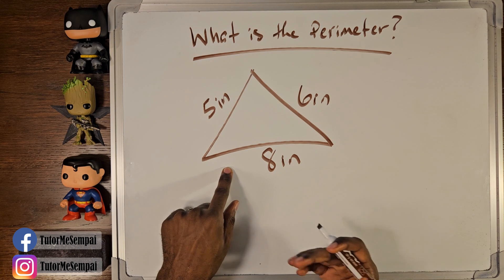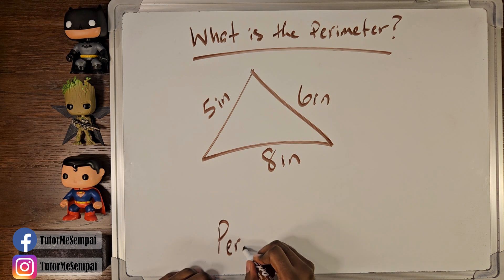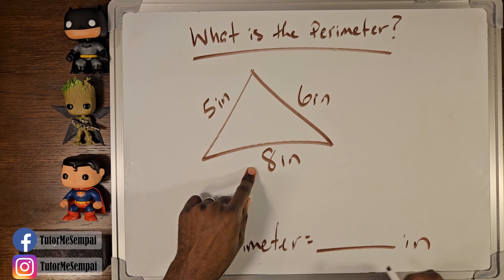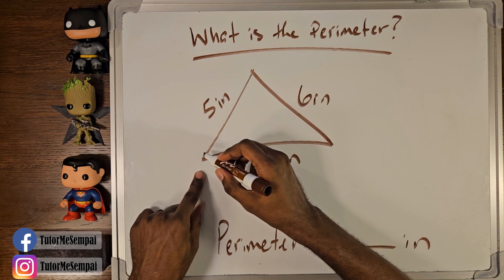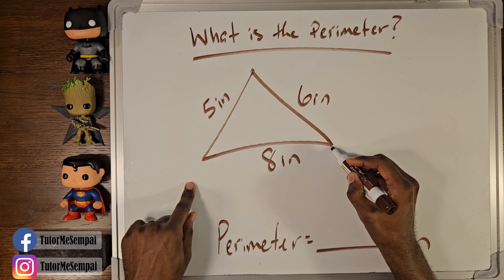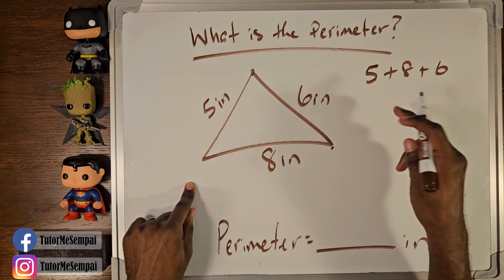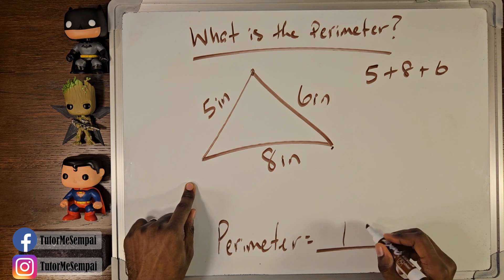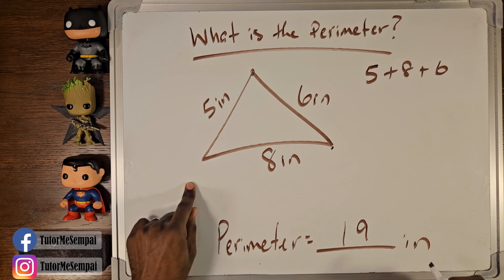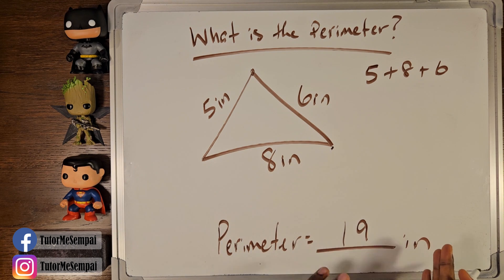So how do you find the perimeter for this triangle? We know that all of our sides have a number and a unit — we have inches. We simply travel from one side to the next until we get back to where we started. We travel five, then eight, then six, and we're back. So that means we're doing 5 plus 8 plus 6, which is going to be 19. Don't forget your units — it's 19 inches.